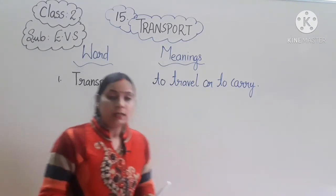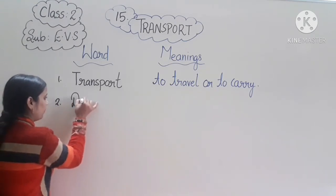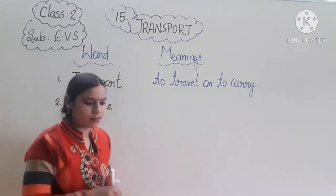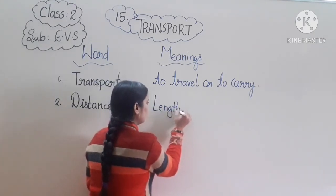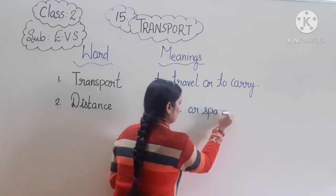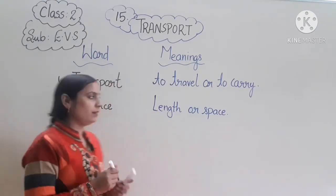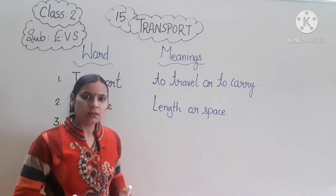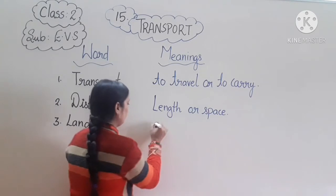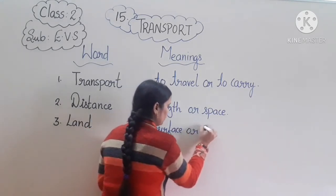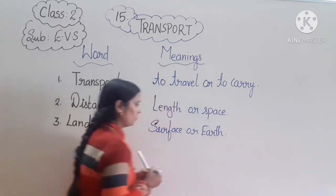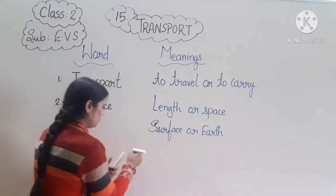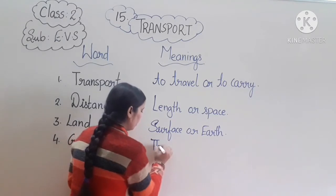The second word is distance. Distance means length or space. Third one is land. Land means surface or earth. Fourth one is goods. Goods means things or materials.